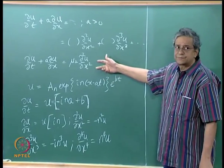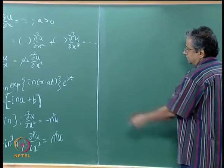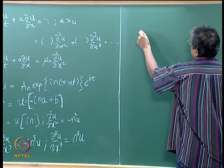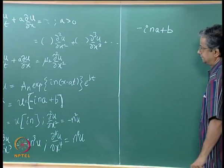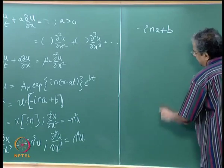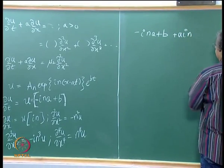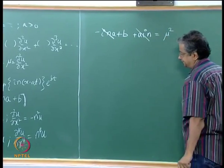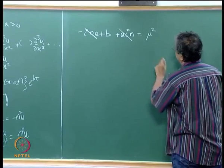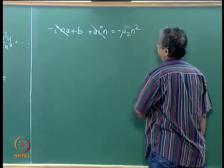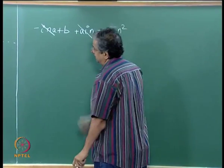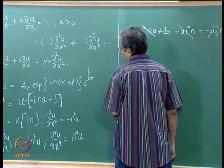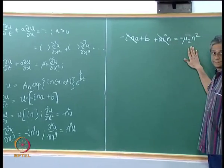We work it out for the equation with only the second derivative term. All terms have u as a coefficient, which cancels. Substituting: the first term gives -i·n·a plus b, and ∂u/∂x has a multiplying it giving +a·i·n — which is why the original equation was satisfied — equals -mu_2 times n². So b equals -mu_2 times n squared.